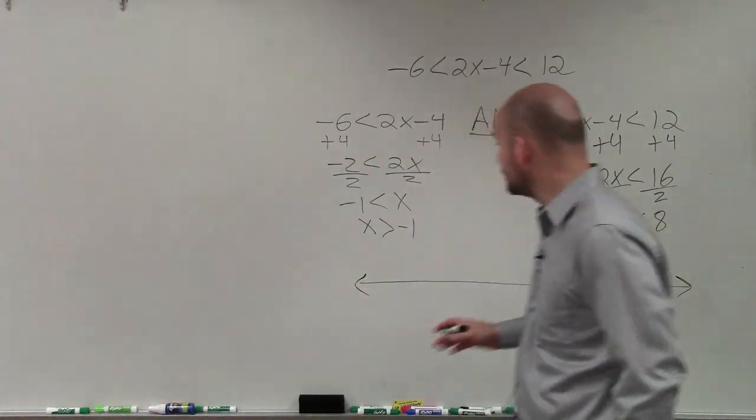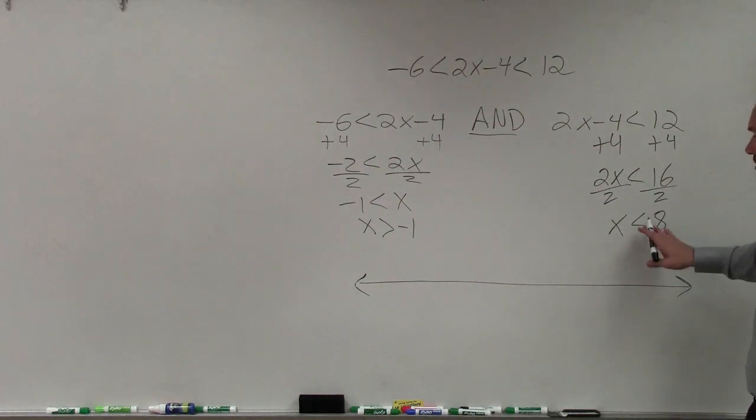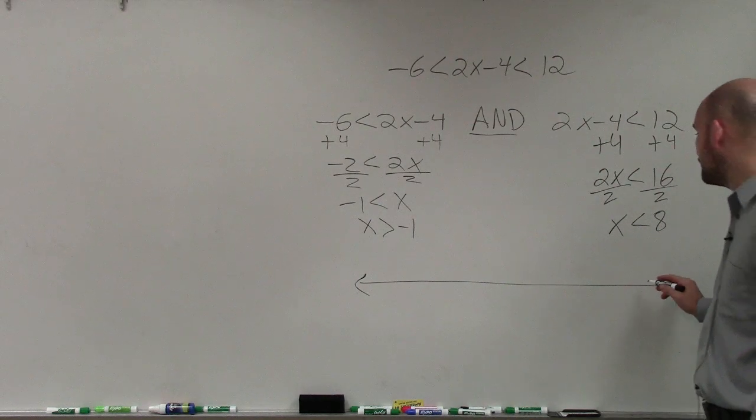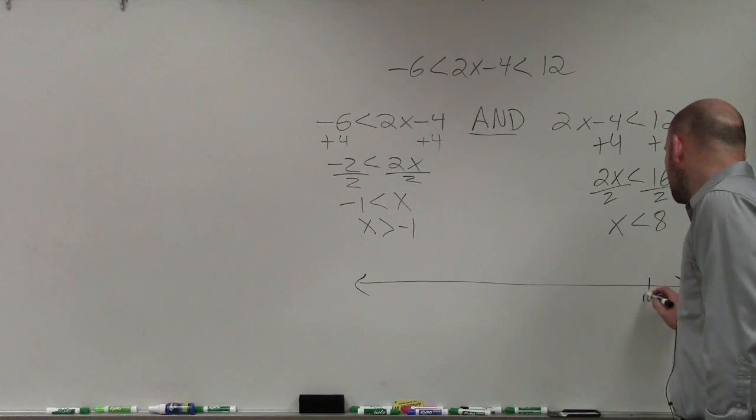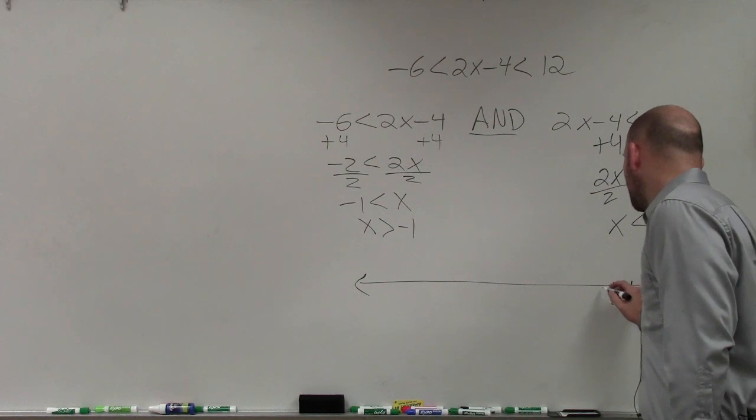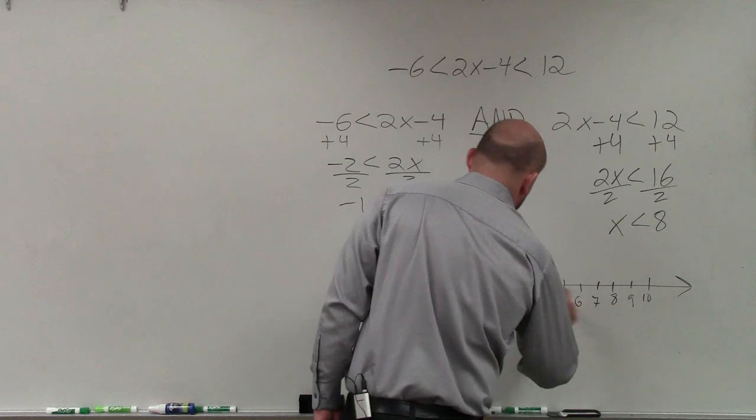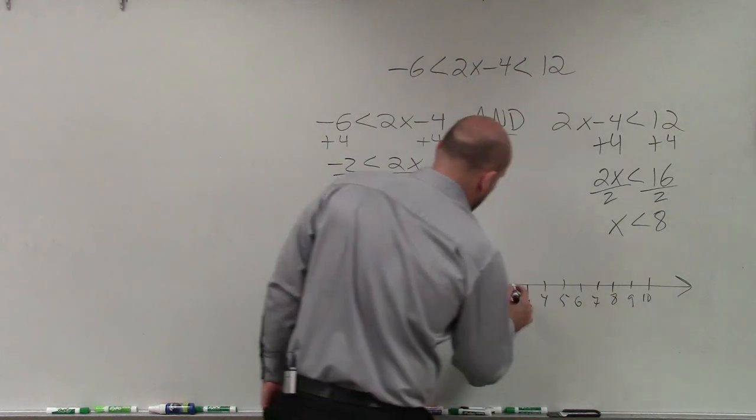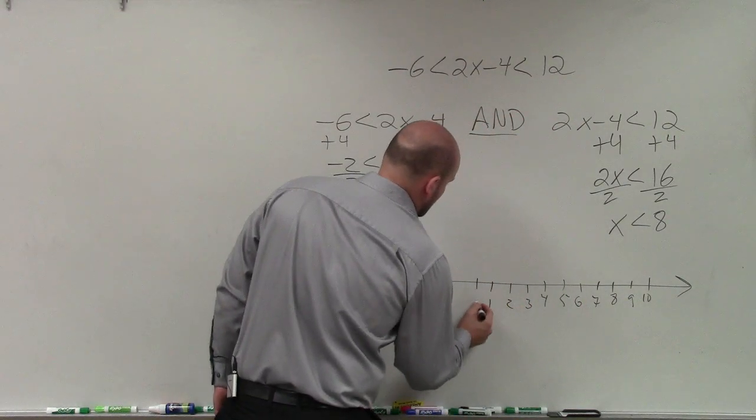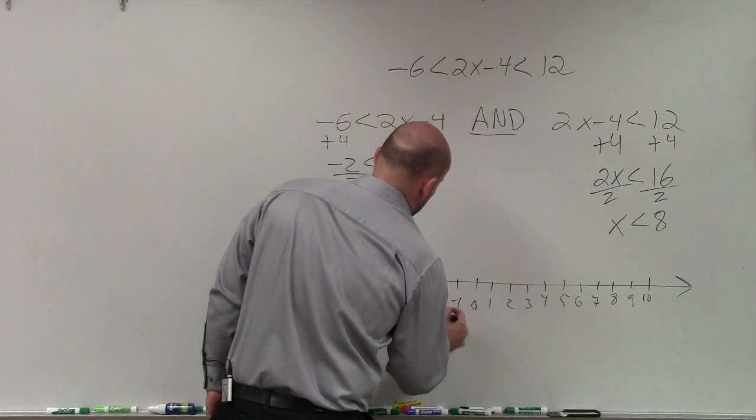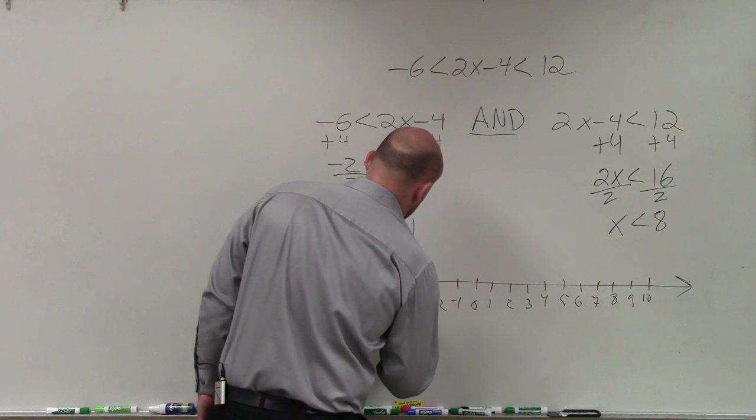Now to graph this, I'm going to want to make sure I can include a number line. That's going to include the number 8, as well as include the number negative 1. So I'll do 10, 9, 8, 7, 6, 5, 4, 3, 2, 1, 0, negative 1, negative 2, negative 3, negative 4.